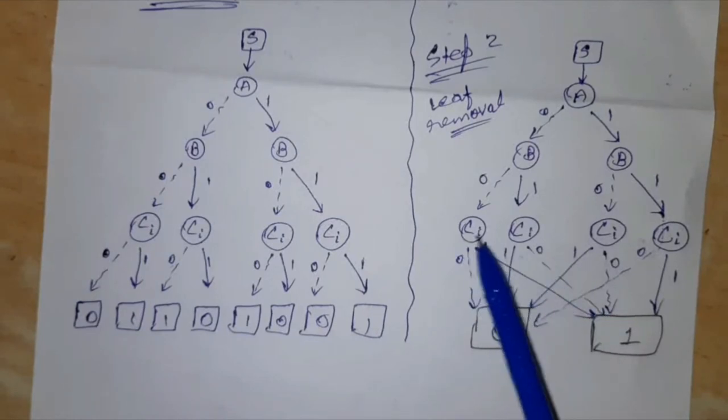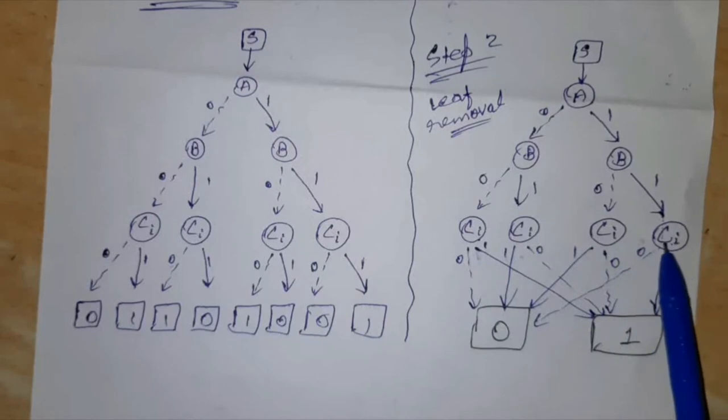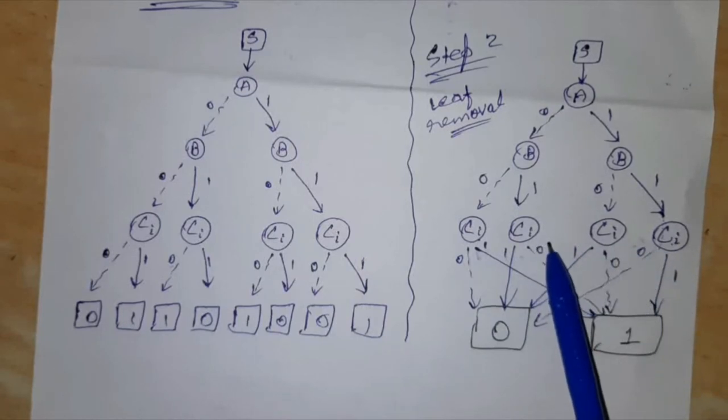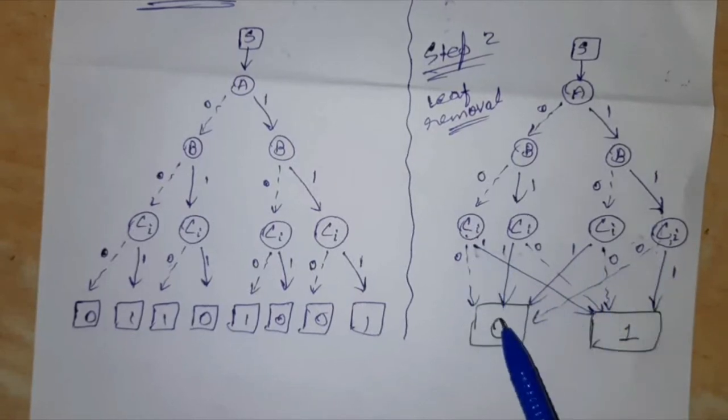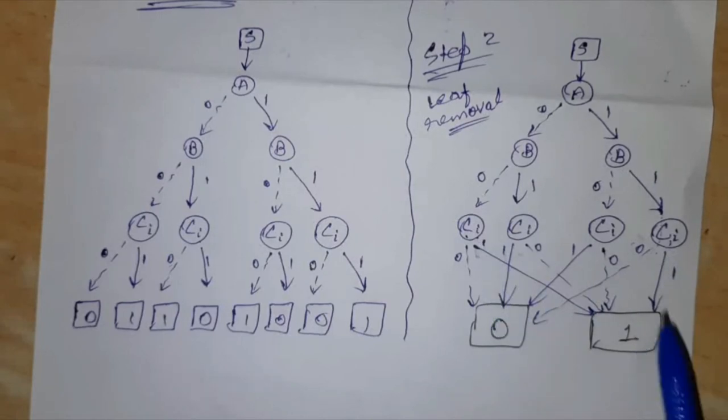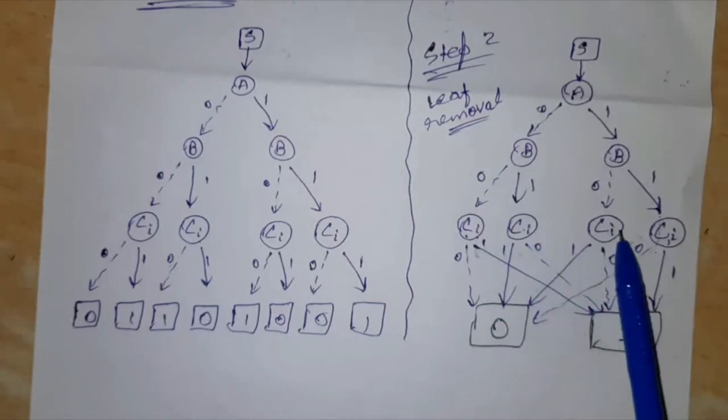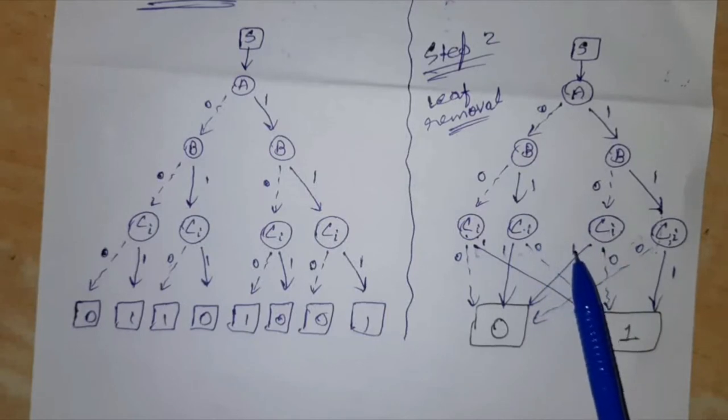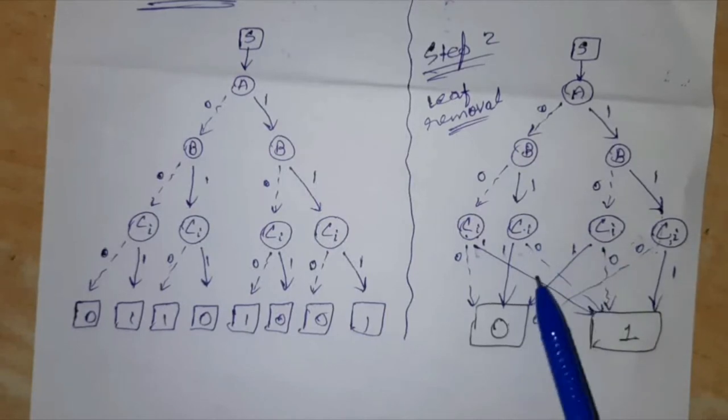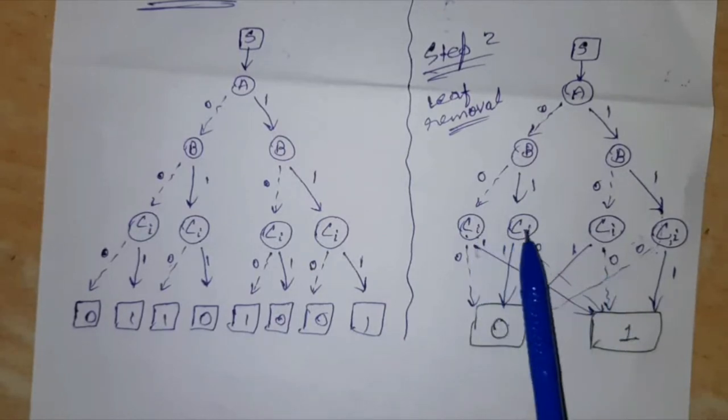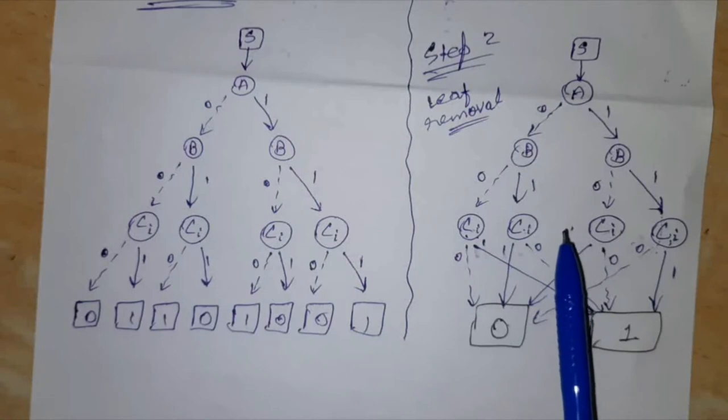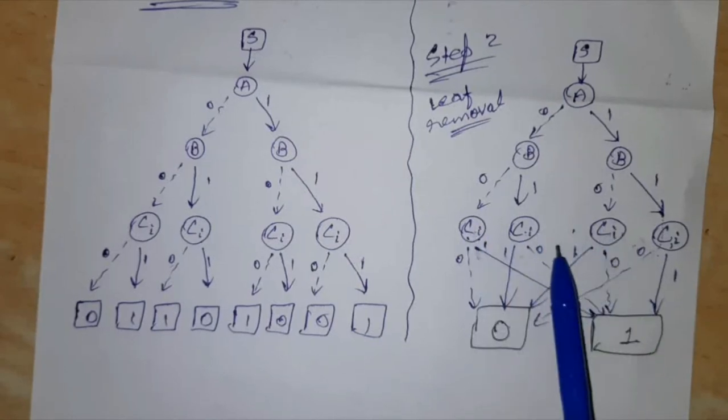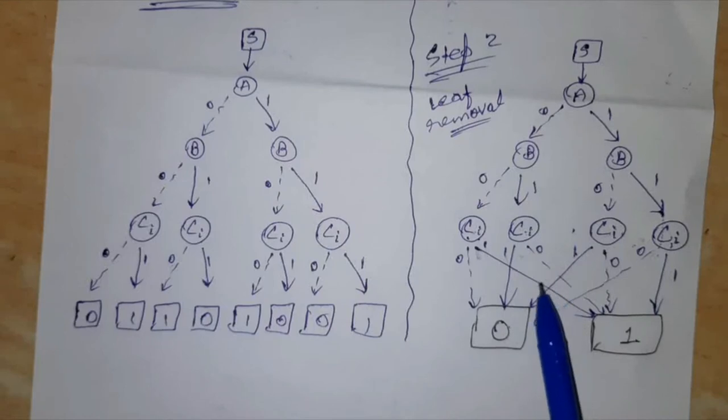Now see whether any reduction is possible in this. Let me try these 4 CI nodes. I think we can reduce them to 2. Because this CI node and this CI node, for 0 both are coming to 0, for 1 both are going to 1. And for these 2 CI nodes, when for condition 1 they are going to 0 and for condition 0 they are going to 1. So yes, we can replace these 2 with 1 single CI node and these 2 CI nodes with 1 single CI node.